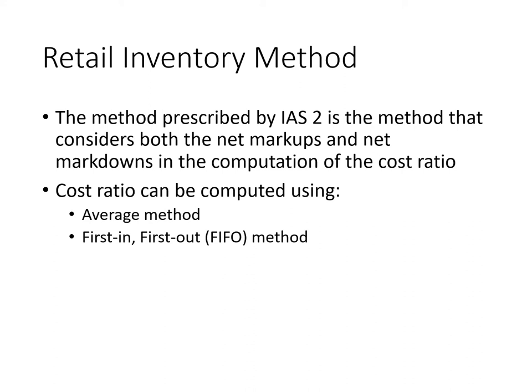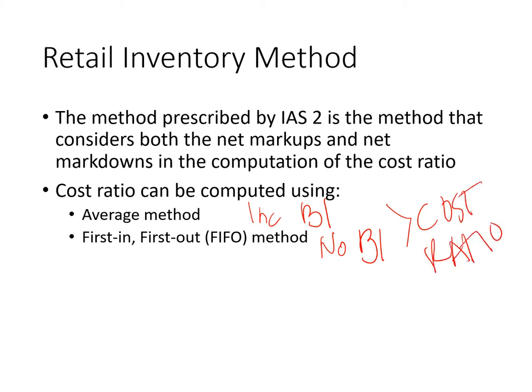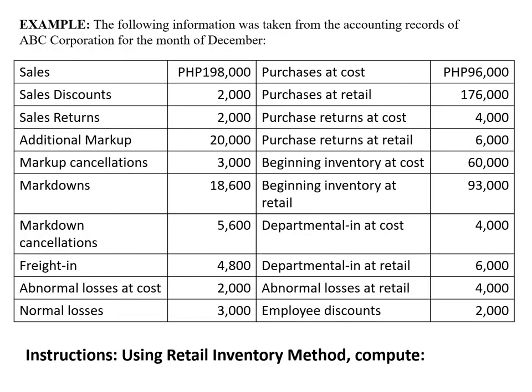The cost ratio can be computed using the average method or the first-in, first-out (FIFO) method. The difference is: in the average method, the beginning inventory is included in computing the cost ratio; in the FIFO method, the beginning inventory is excluded.